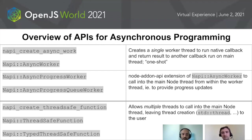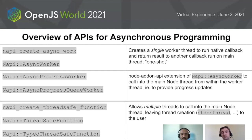On this callback, you're able to transform your native C++ data into the Node data. As well as the async worker, we have some Node add-on API specific extensions: the async progress worker and the async progress queue worker, which allow you to ping from your native thread to the Node thread with various progress updates. Finally, we have thread-safe functions — full-featured APIs that allow you to create as many threads as you want and ping into the Node API as you find necessary.